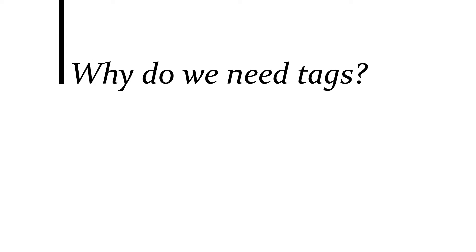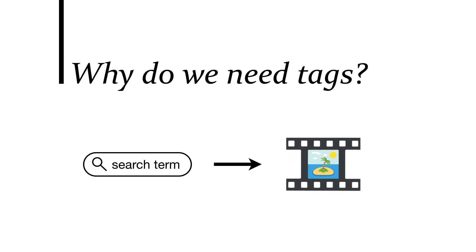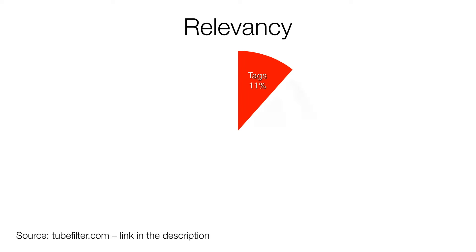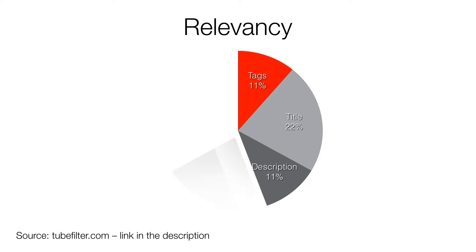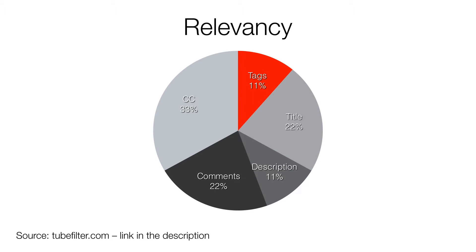But first we need to ask: why do we need tags? Obviously, to rank in YouTube's search. More precisely, tags allow YouTube to decide which videos to show for a given search term. YouTube uses various information to decide if a video is relevant — tags, the title, the description, comments, and the closed captions.